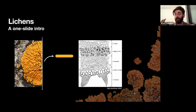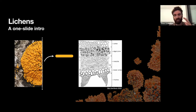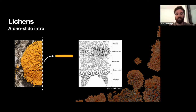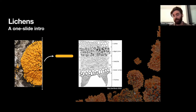Then you have a thin layer of algal cells — single-cell algae. Underneath that, you have another layer of fungal cells, kind of like an algae sandwiched between two layers of lichenized fungi. This layer, the medulla, is where things like gas exchange and water transport take place. Some lichens also have a lower cortex and even certain structures to allow them to attach to the surface they're growing on.